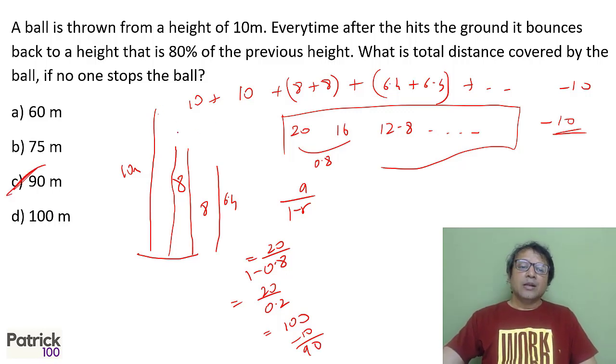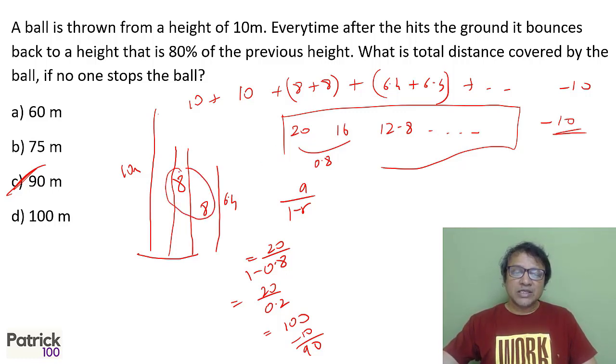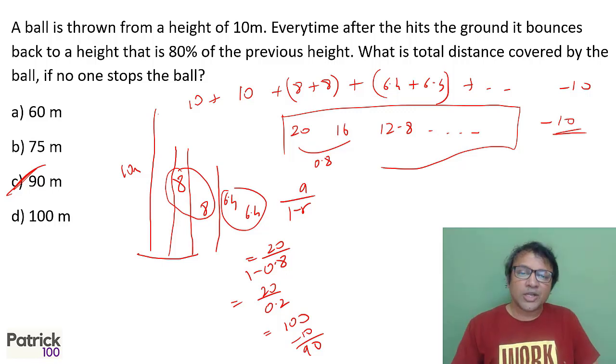So 10 bounces back to 8, comes down 8, goes up 6.4, comes back 6.4, and so on. Each time the total distance is 80% of the previous, so it travels 16, then 12.8, and so on. The common ratio is 0.8. Whenever you see a common ratio and infinite cases, use the formula for sum of GP: A upon 1 minus R.